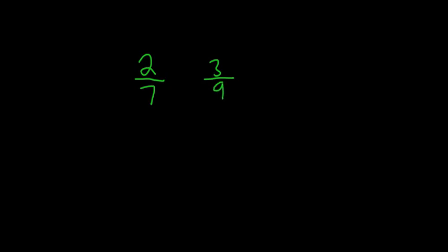So which fraction is bigger? What you do is you write them side by side and then you multiply like this. 7 times 3 is 21. 9 times 2 is 18. So 21 is bigger than 18. So this fraction here, 3 ninths, this is the bigger one.